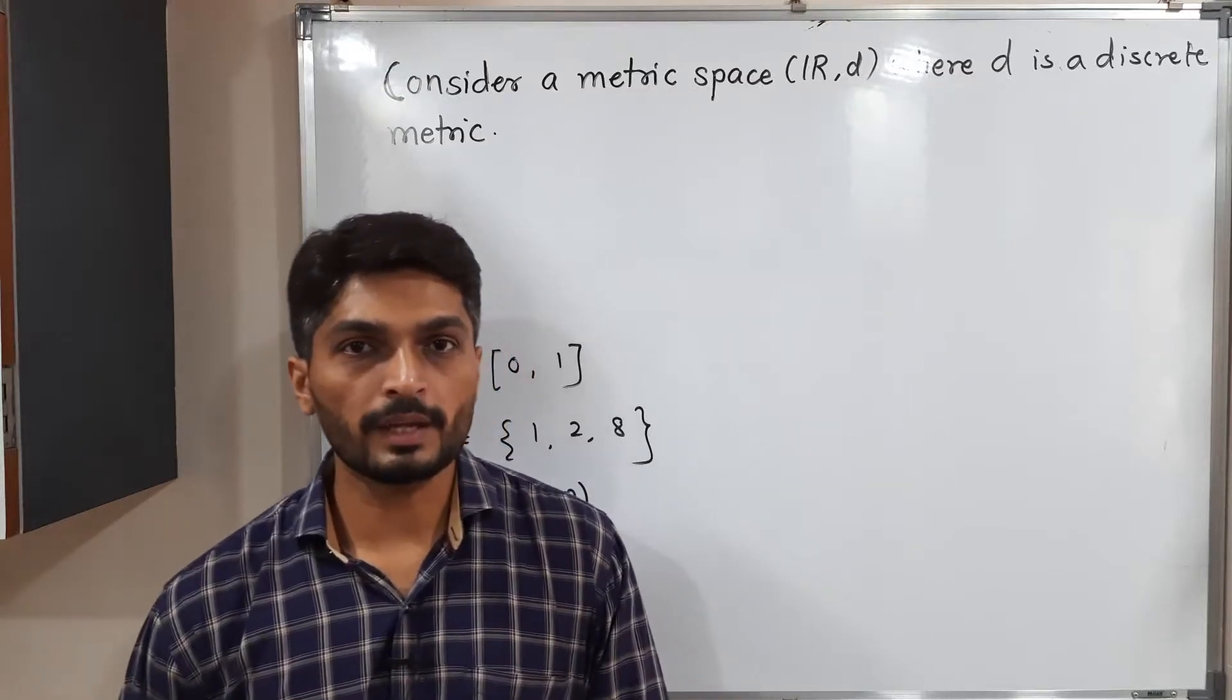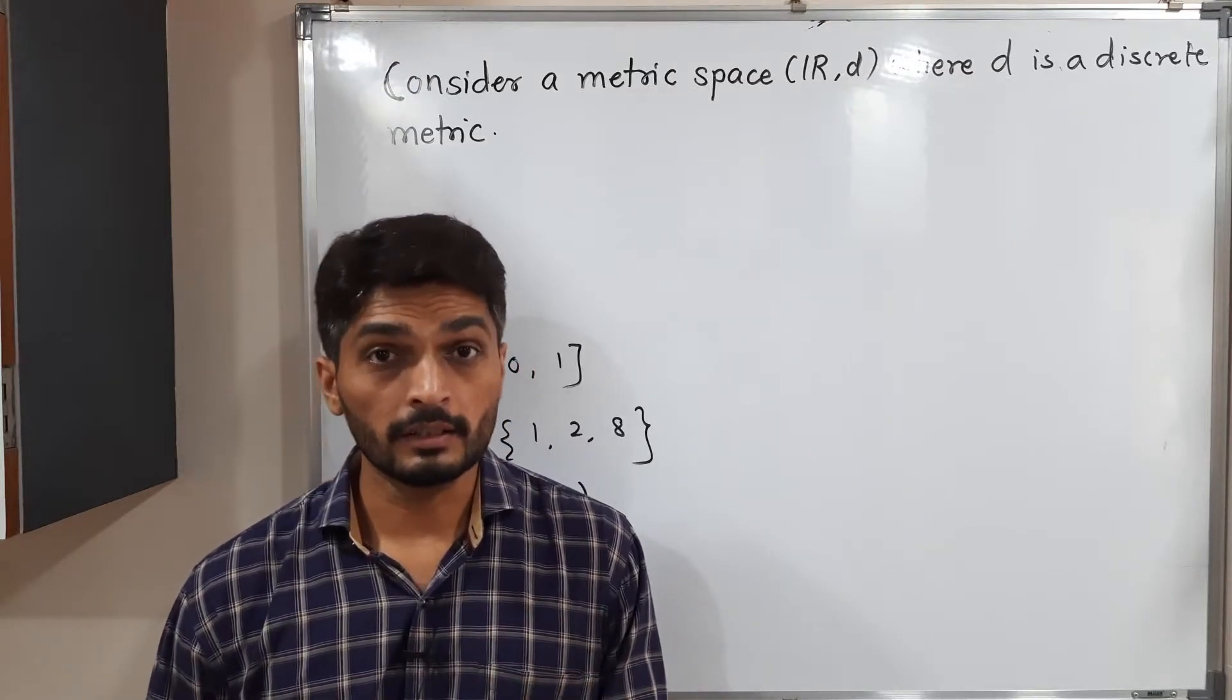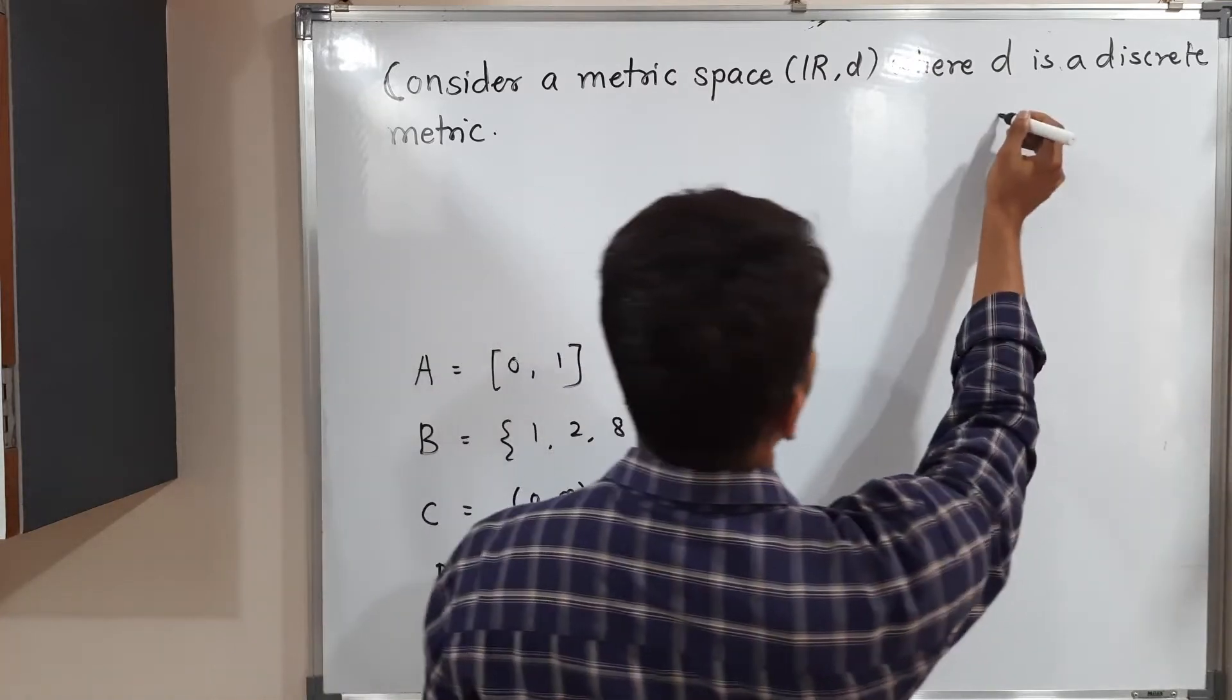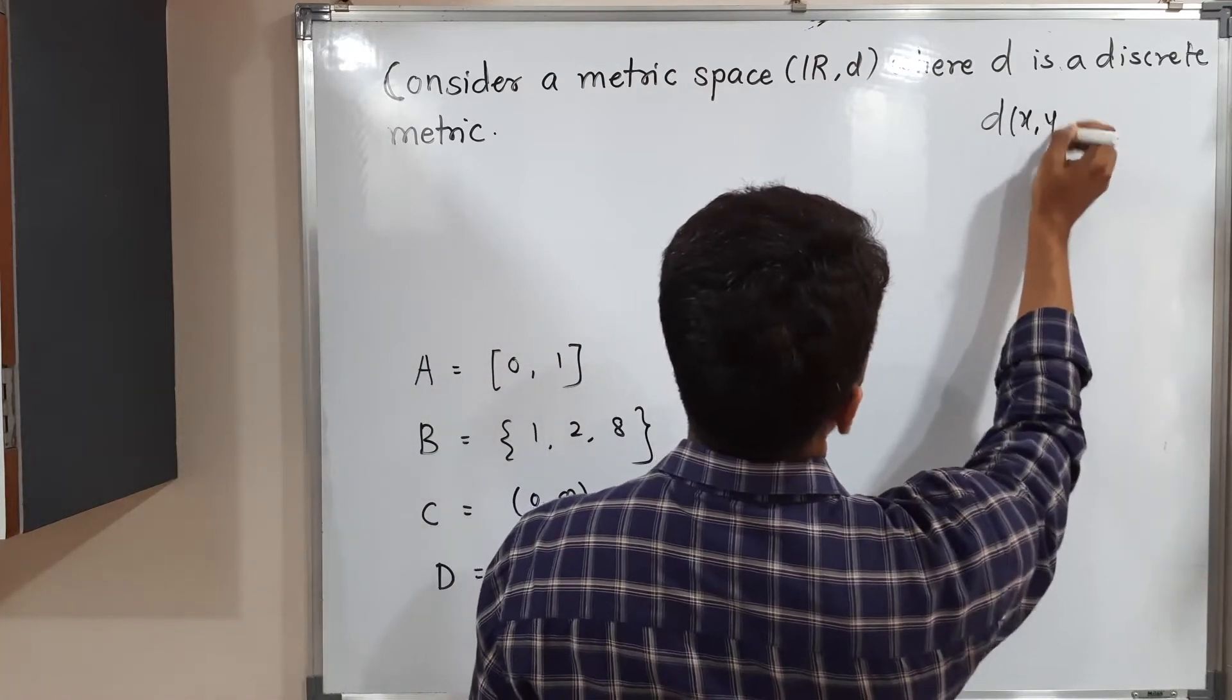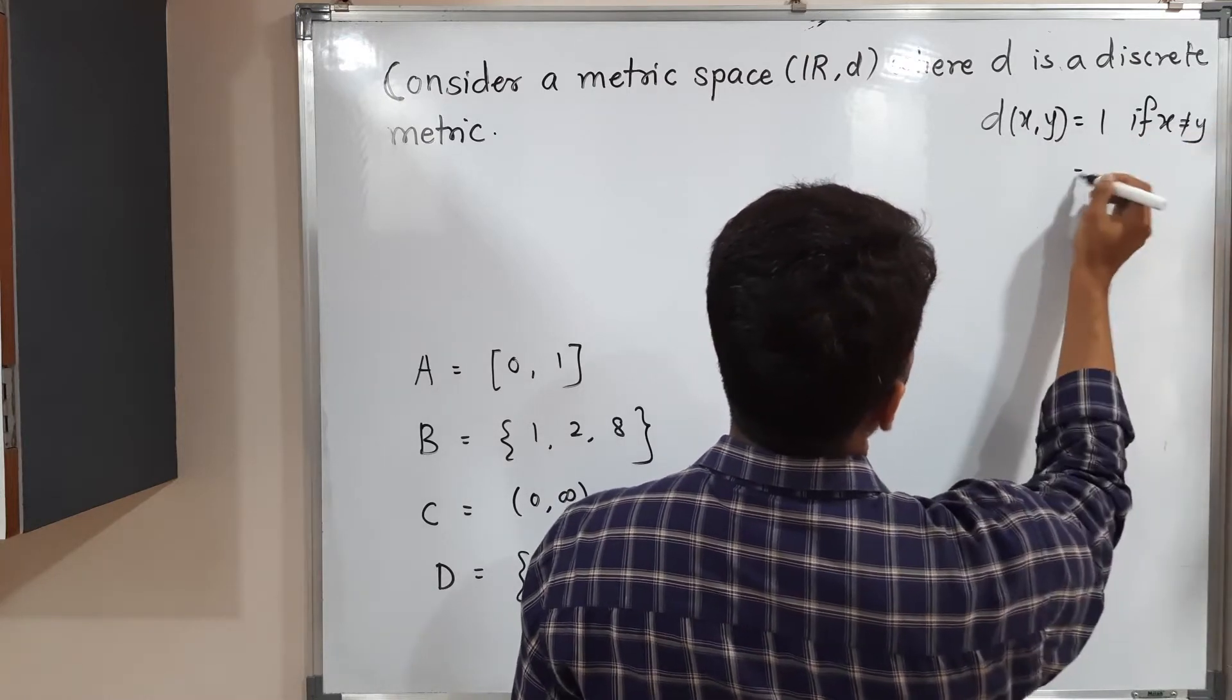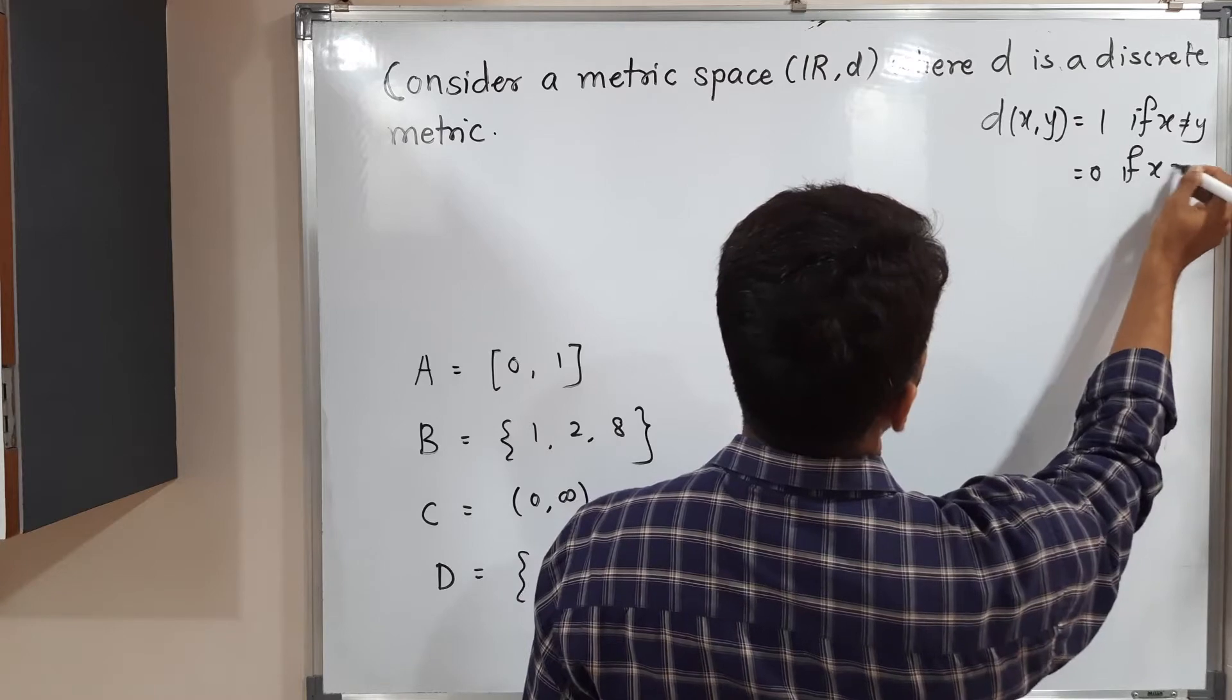Let us discuss this example. We have a metric space (ℝ, d) where d is a discrete metric, defined as: d(x,y) equals 1 if x is not equal to y, and equals 0 if x equals y.